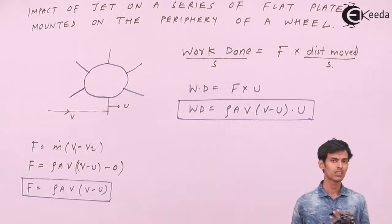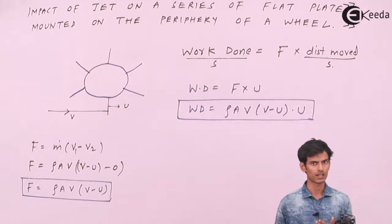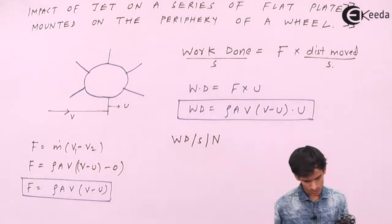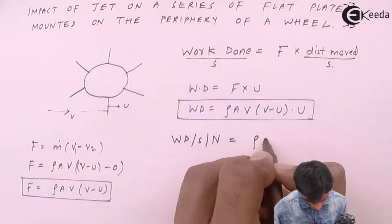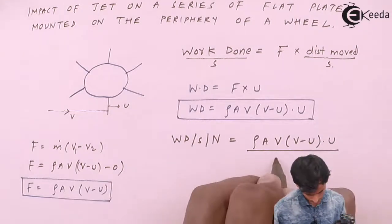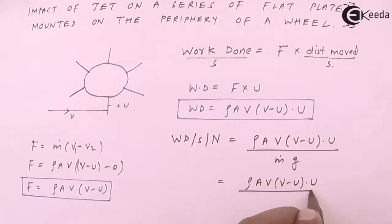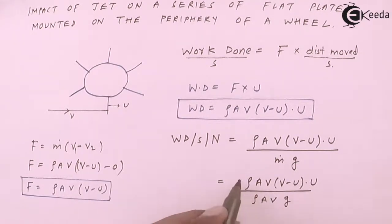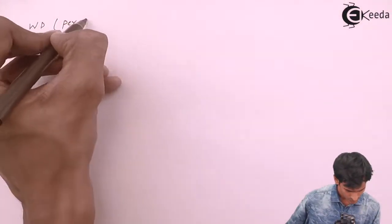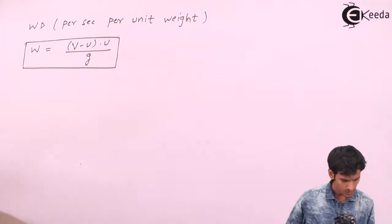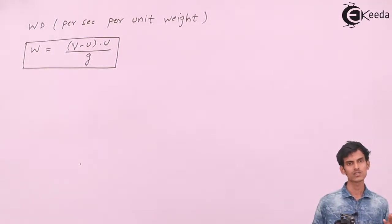Now let's see the work done per unit weight of fluid per second. We divide work done per second by the weight of the fluid, which is mass times gravity. Since m-dot is ρaV, this gives us the formula for work done per second per unit weight of fluid: (V − u) × u / g.